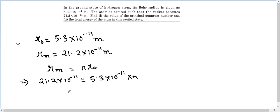Calculating n, which is equal to 21.2 × 10^-11 upon 5.3 × 10^-11, so it comes out to be 4. So the value of principal quantum number here is 4, that means it has reached to the excited level of 4.